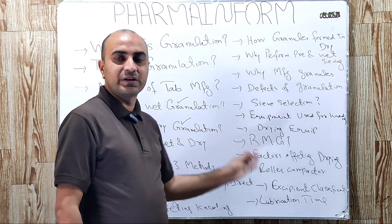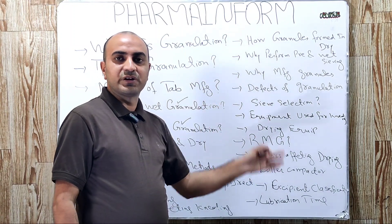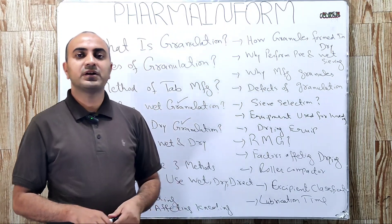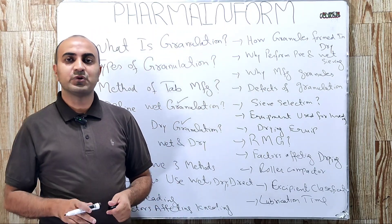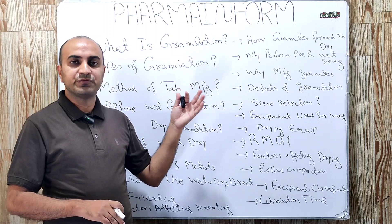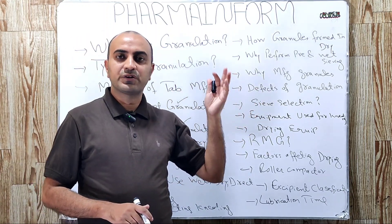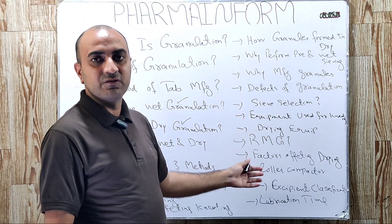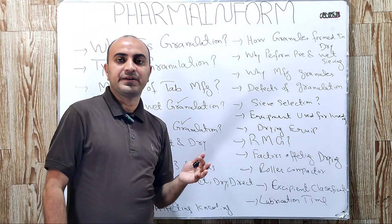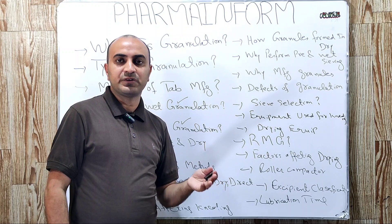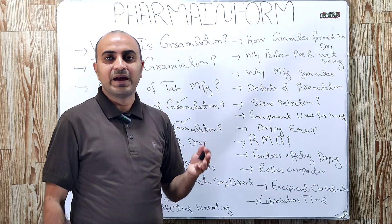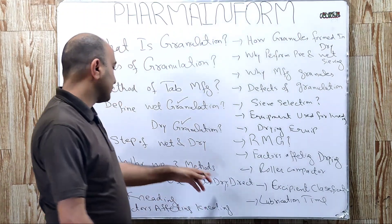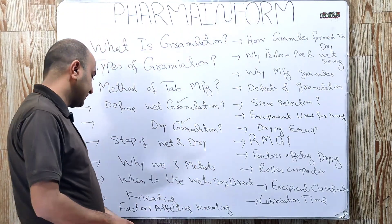When to use wet granulation, when to use dry granulation, and when to use direct compression? If our product is not degraded by the moisture and heat, we use wet granulation. If our product is moisture sensitive and heat sensitive, we will use dry granulation. And if our API has good compaction properties, good flow properties, and its dose quantity is very low, then we use direct compression method.